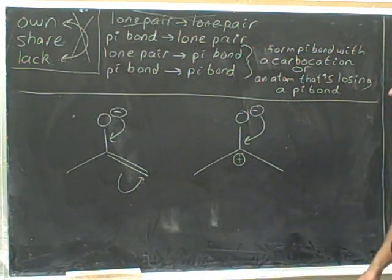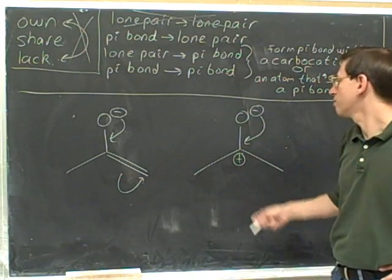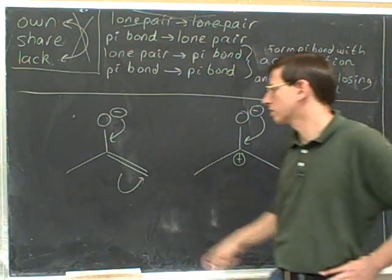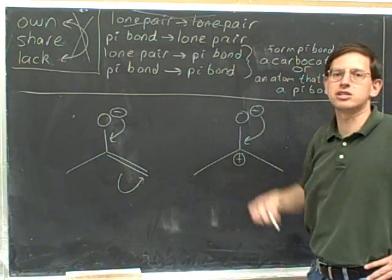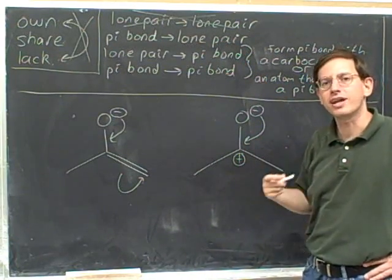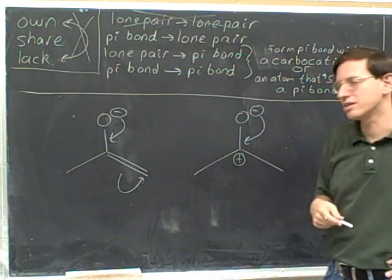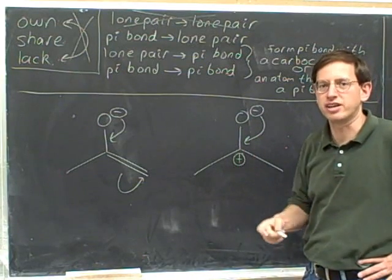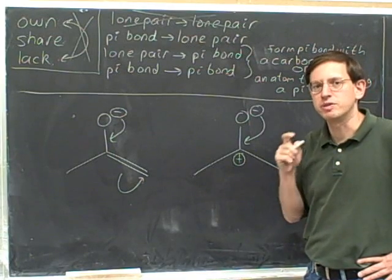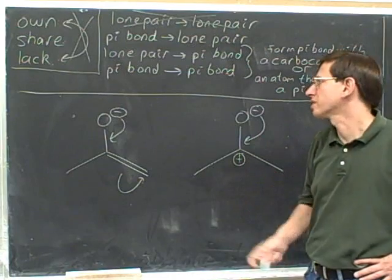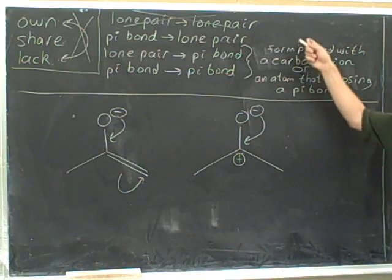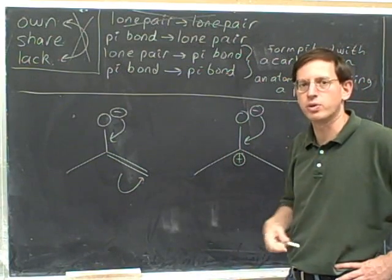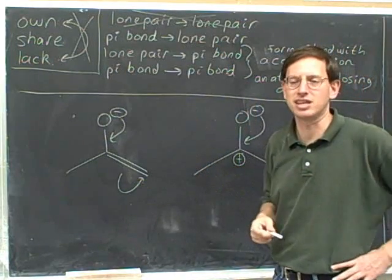These are the only two ways to form a pi bond. When do you know you're making a pi bond? When the head of the arrow is pointing to the bond. So you'd better be forming that pi bond with a carbocation or with an atom that's also losing a pi bond. When the head of the arrow is pointing directly at an atom, you're forming a lone pair — then you don't need to worry about exceeding an octet. The tricky and most common mistake case is when the head of the arrow is pointing to a bond, because that's when you're forming a pi bond that could potentially exceed an octet.